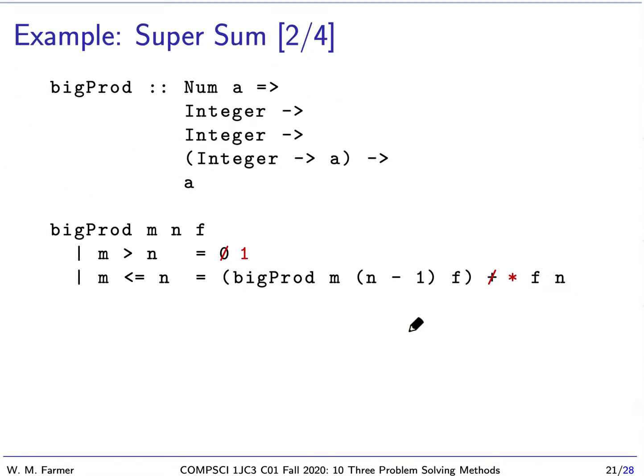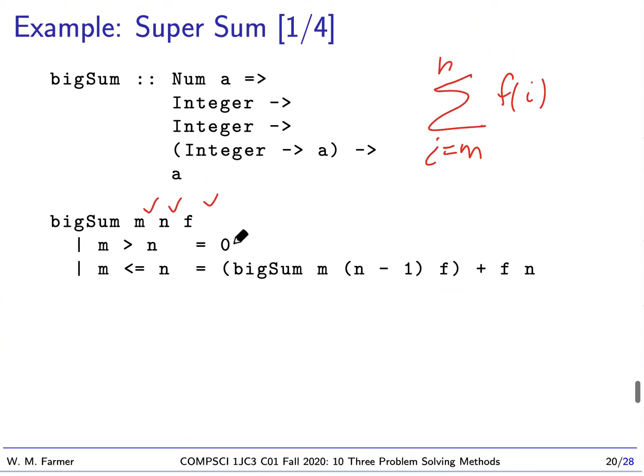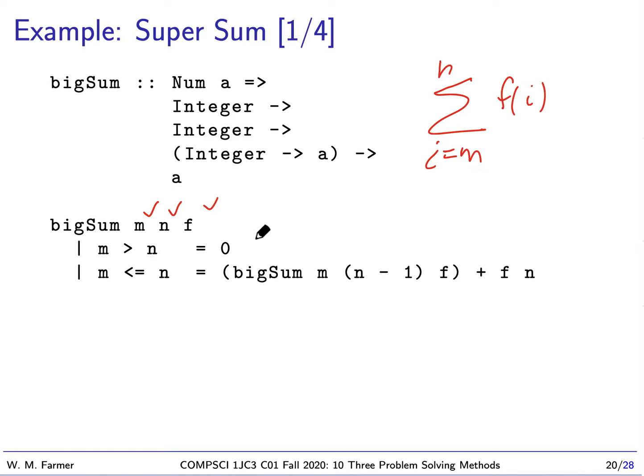And you also know, we can use the same form to compute big pi. We have m, n, and f. The difference, though, is we have to change the zero to one. We have to change the plus to times. Now, the interesting thing is, if you think a moment, why was it zero for add and one for multiply? Well, it was zero for add, if we go back up here. This is the additive identity.